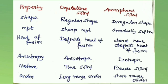Crystalline solids are true solids, while amorphous solids are pseudo solids or super-cooled liquids. Crystalline solids exhibit long-range order, whereas amorphous solids show only short-range order. When cut with a sharp-edged tool, crystalline solids split into two pieces with plain and smooth newly generated surfaces, but amorphous solids produce irregular surfaces.